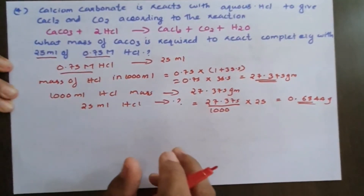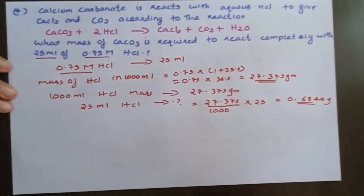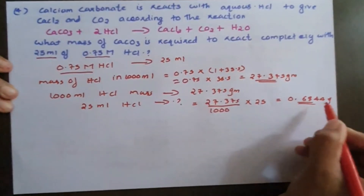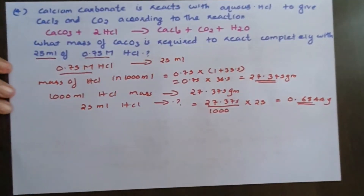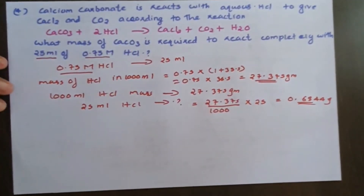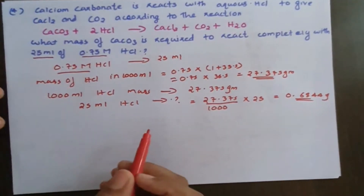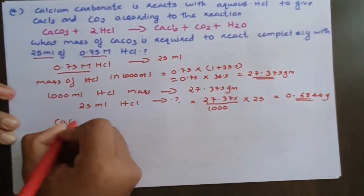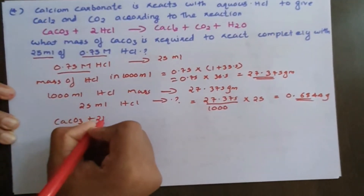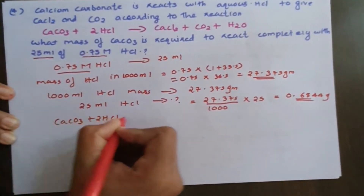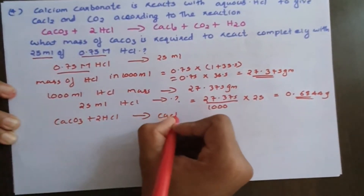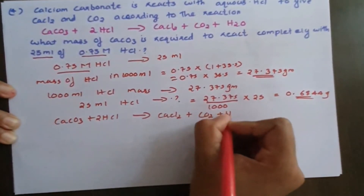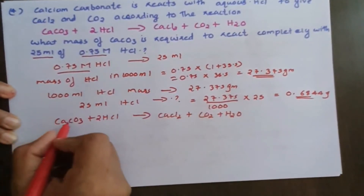25 mL of HCl gives 0.6844 g. Now let's go to the balanced equation: CaCO₃ + 2HCl → CaCl₂ + CO₂ + H₂O. This is the equation.